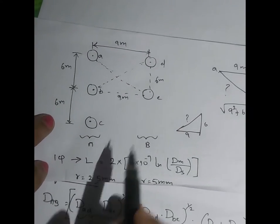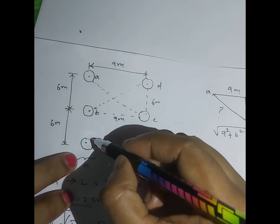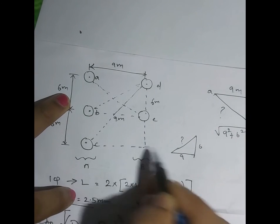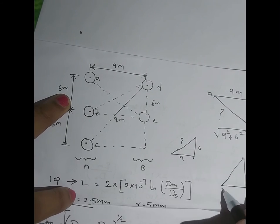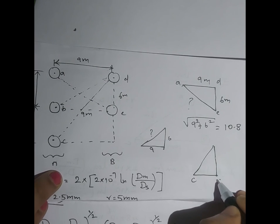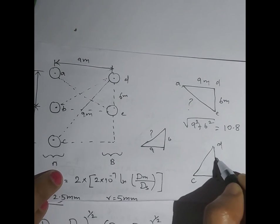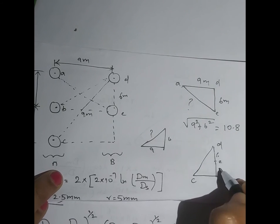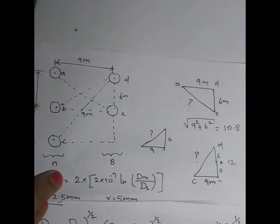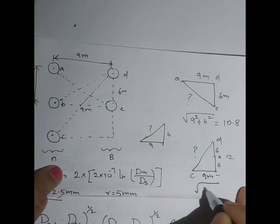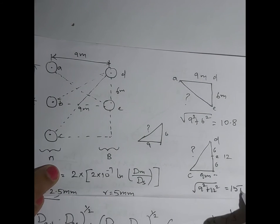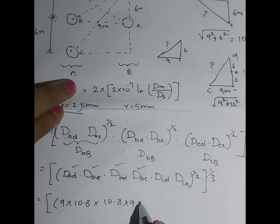Then Dcd (C to D): this forms a bigger triangle. The base is 9 m and the height is 6 + 6 = 12 m. So Dcd = √(9² + 12²) = 15 m. Then Dce (C to E): this forms another triangle with sides 9 m and 6 m, so √(9² + 6²) = 10.8 m.